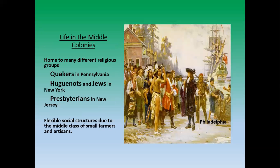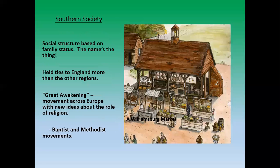Life in the middle colonies was very diverse, with very different religious groups. We have the Quakers of Pennsylvania, the Huguenots — the French Protestants — and Jewish people settling in New York. Presbyterians were known for settling in New Jersey. As a side note, Catholics would be known for settling in Maryland. Because of all this diversity, social structures became very flexible. There would be a growing middle class, small farmers held a decent amount of regard, and artisans would flock to this area and do well for themselves with the trade business.